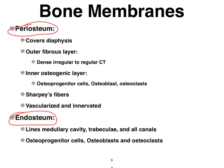The periosteum covers most of the diaphysis and consists of two sub-layers. The outer layer has a bunch of fibers in it — it's a dense regular to dense irregular connective tissue; it's vascularized, innervated, and provides protection. The inner layer, which actually touches the bone itself, is made up of bone cells. We refer to this layer as the osteogenic layer. The bone cell types we find there are the osteoprogenitor cells, osteoblasts, and osteoclasts.